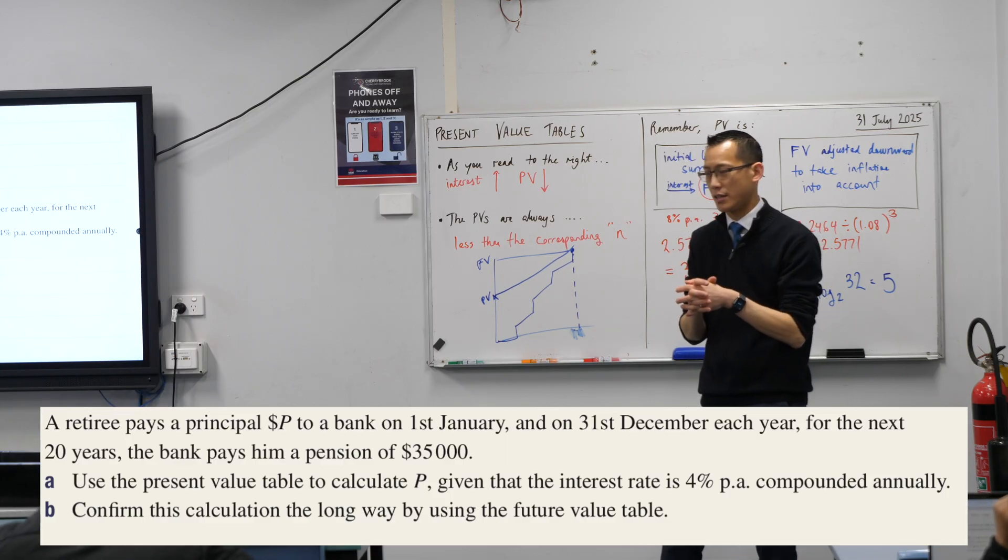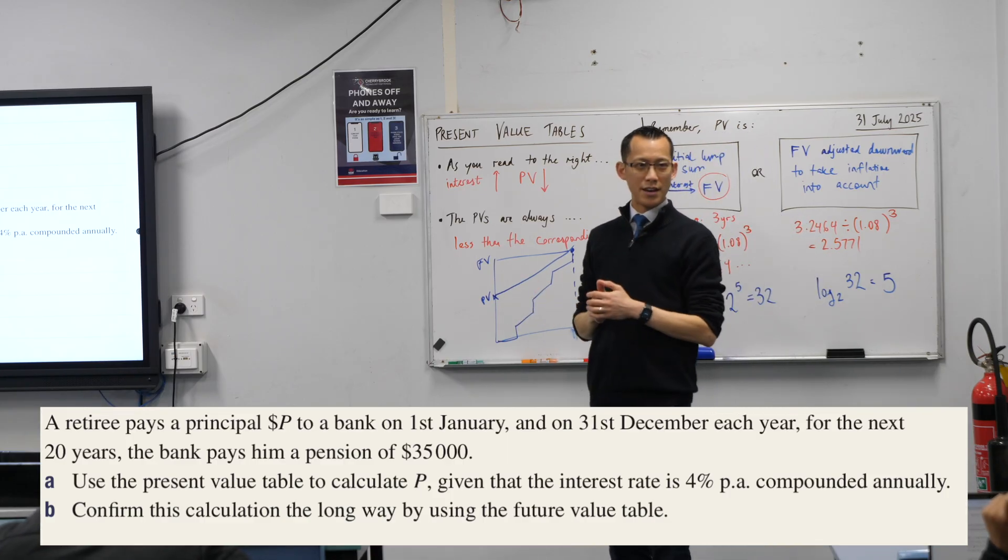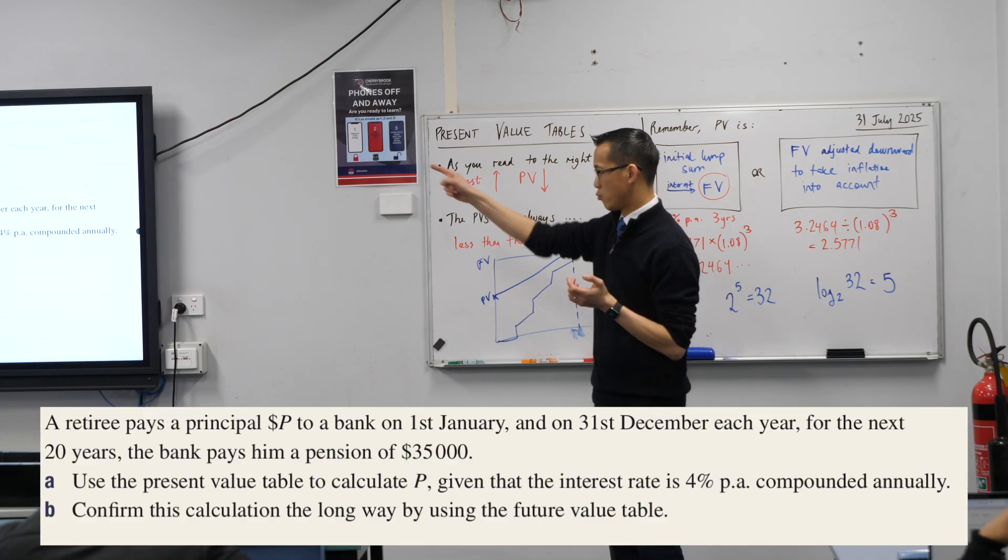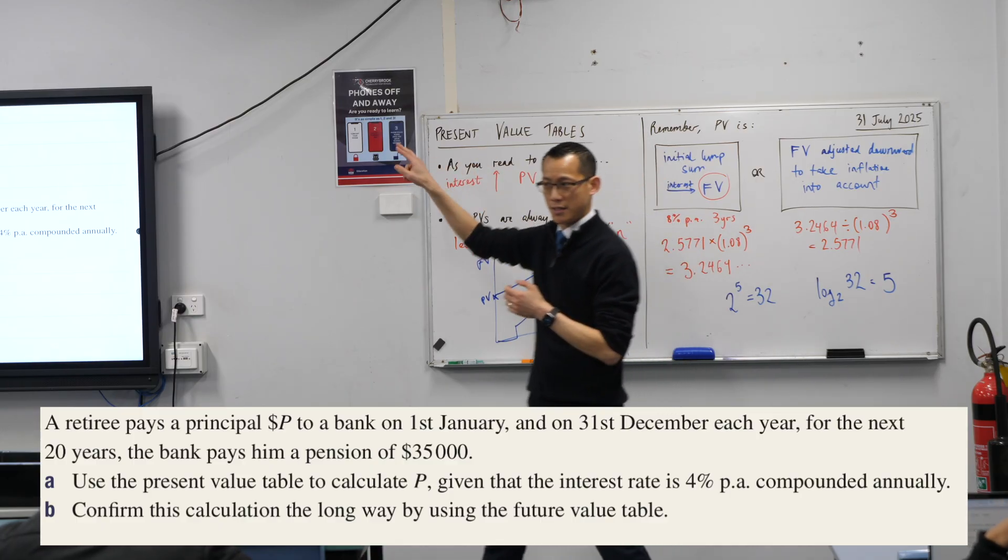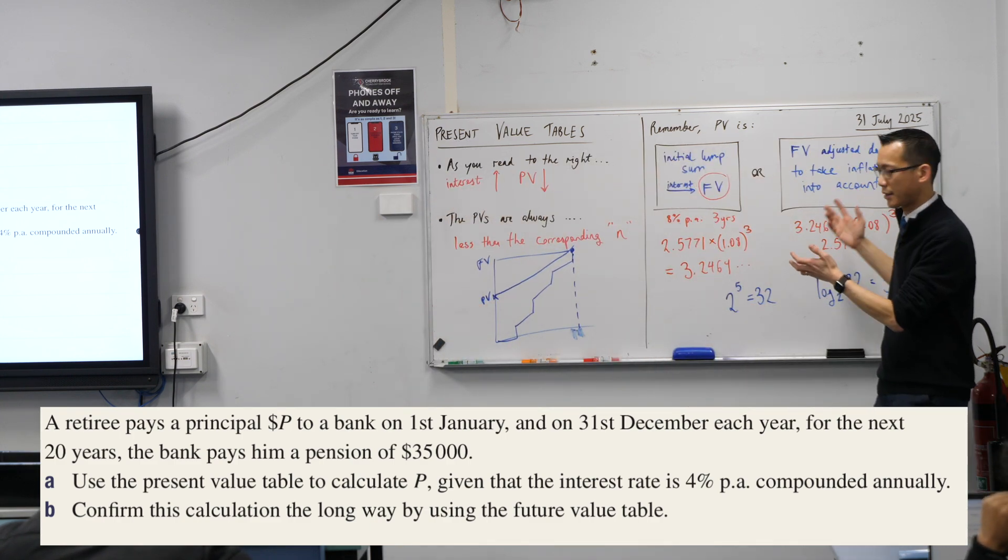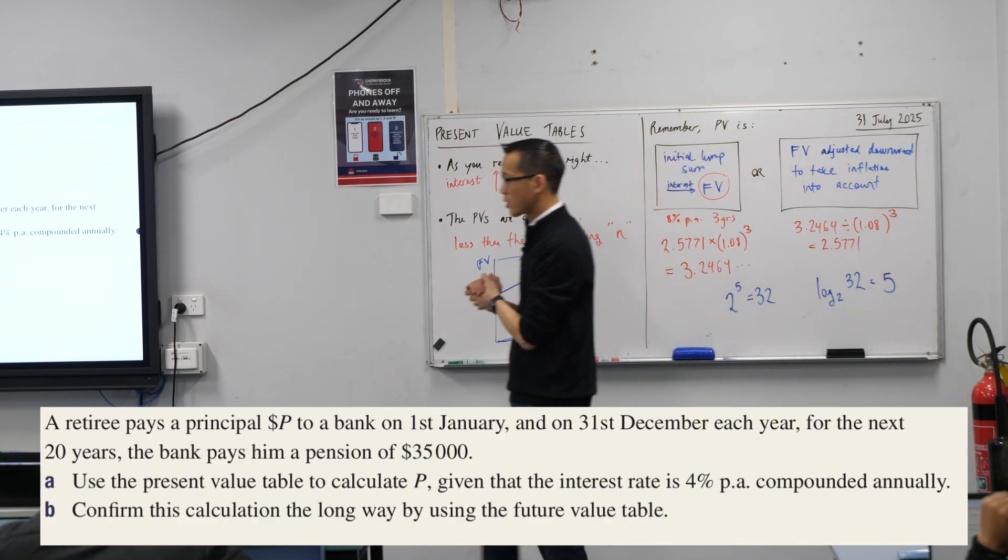The trickiest part of these questions is you know you've got to use the present value table, but you're like, what is the present value? What's the thing there that tells me this is going to be the number I multiply or divide by some interest rate? So let's read it together and see what's going on.